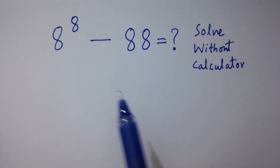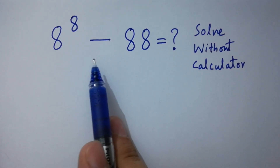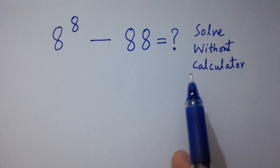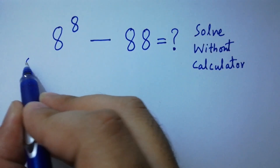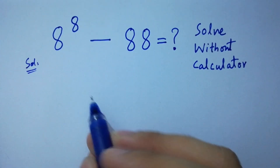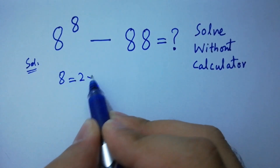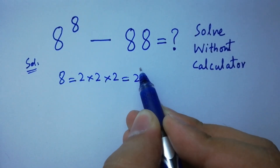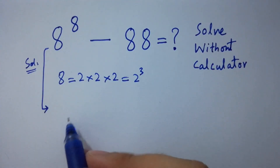Hello friends. 8 to the power 8 minus 88 equals what? Solved without a calculator. Let's find the solution. Since 8 equals 2 times 2 times 2, which is equal to 2 cubed.